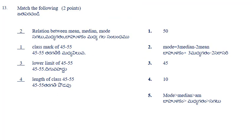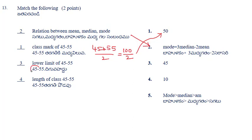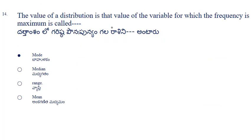Next problem: match the following. The relation between mean, median, and mode: mode = 3 × median − 2 × mean. The mid-value or class mark of 45–55: (45+55)/2 = 100/2 = 50. The lower limit is 45. The class length of 45–55 (next class 55–65) is 10. The value of a distribution for which the frequency is maximum is called the mode.